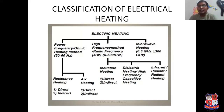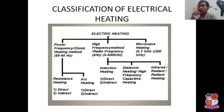Resistance heating works on a very general principle: whenever current flows through a conductor, there will always be generation of heat. The equation that governs it is I²RT.